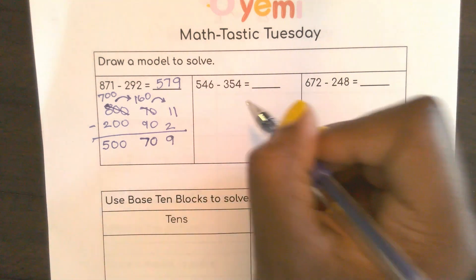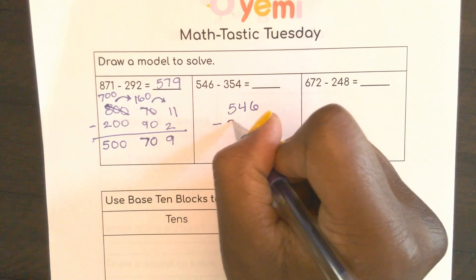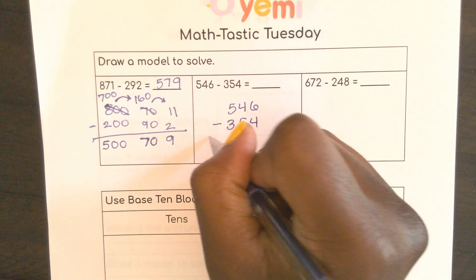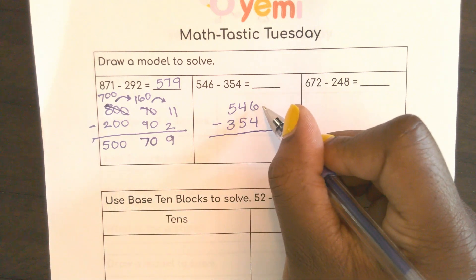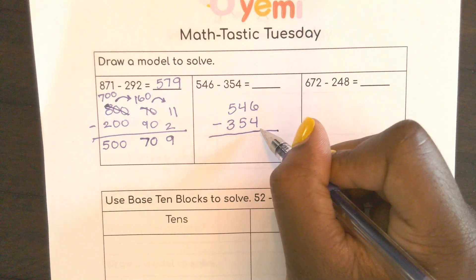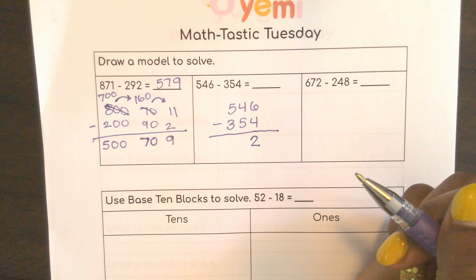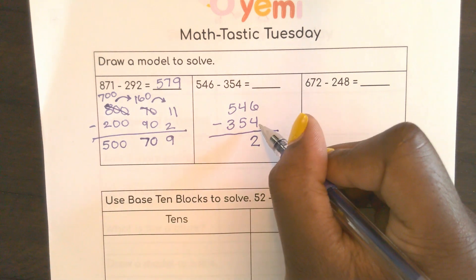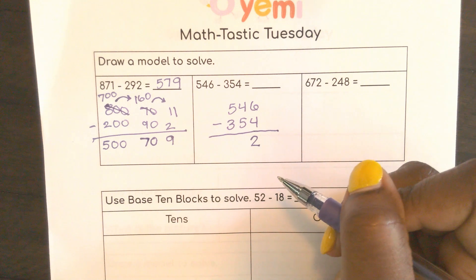So here standard algorithm, 546 minus 354. Well in my ones place I see that if I have 6 cookies I can eat 4 of them. If I ate 4 I would have 2 left. Notice here 2 plus 4 is 6. Just making sure I'm correct. Checking my work.